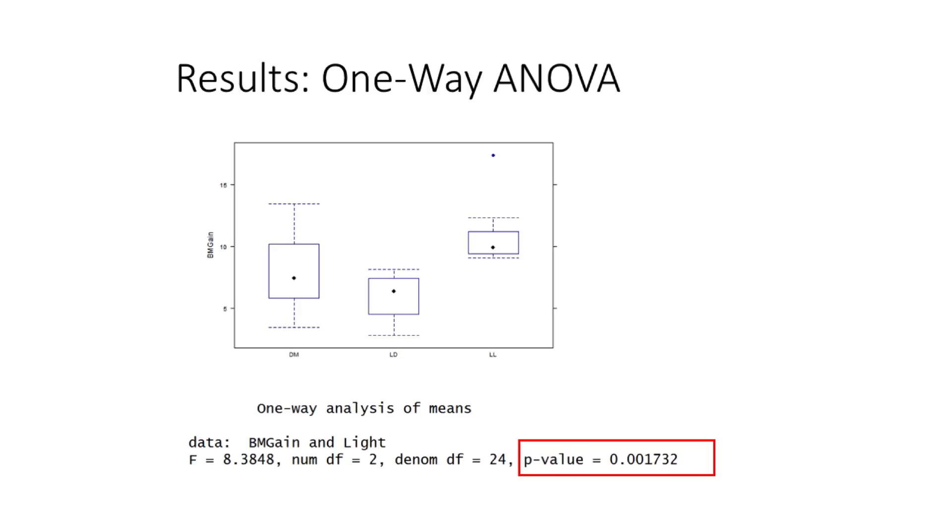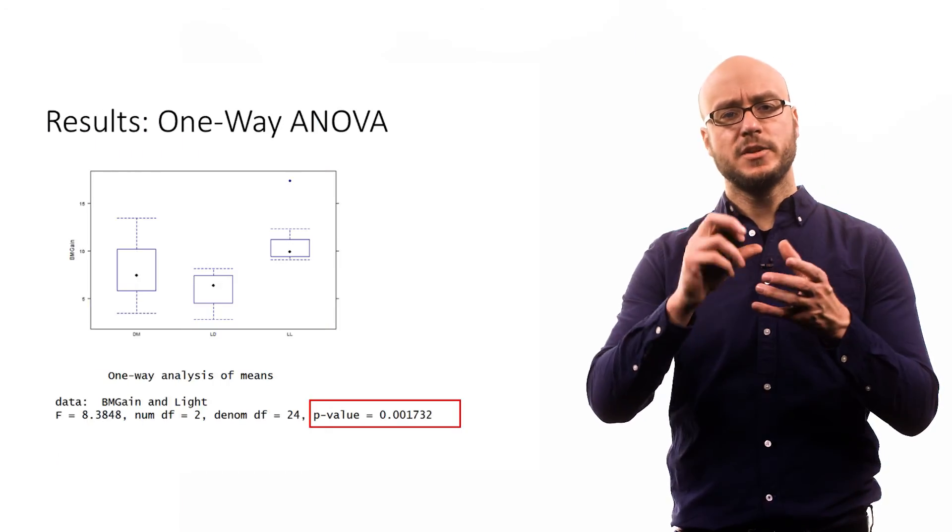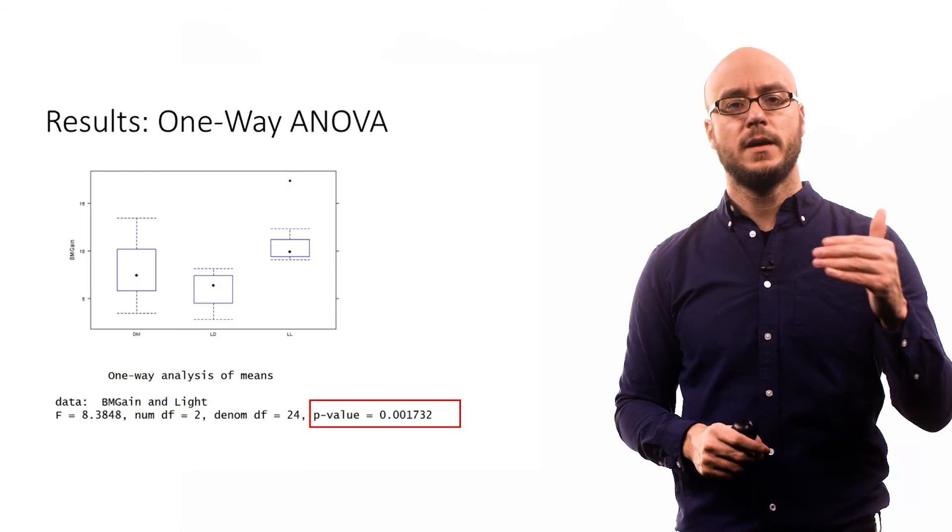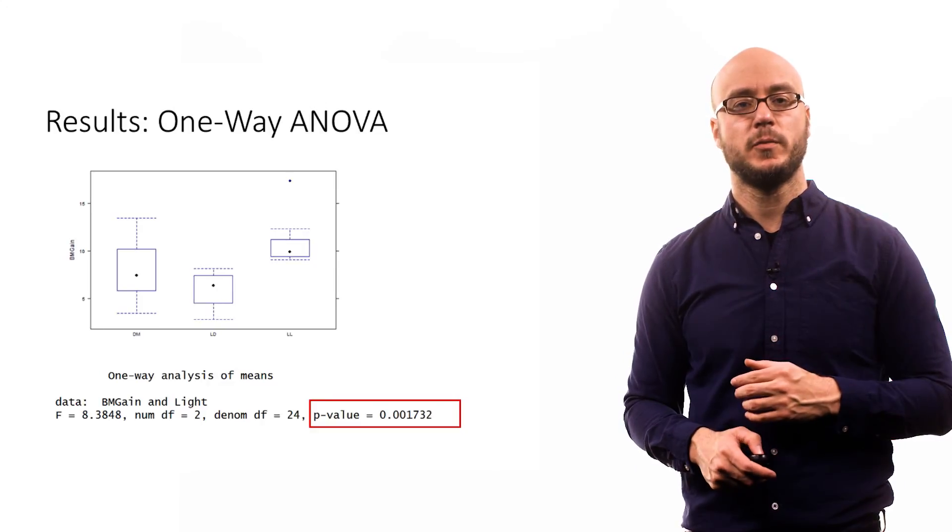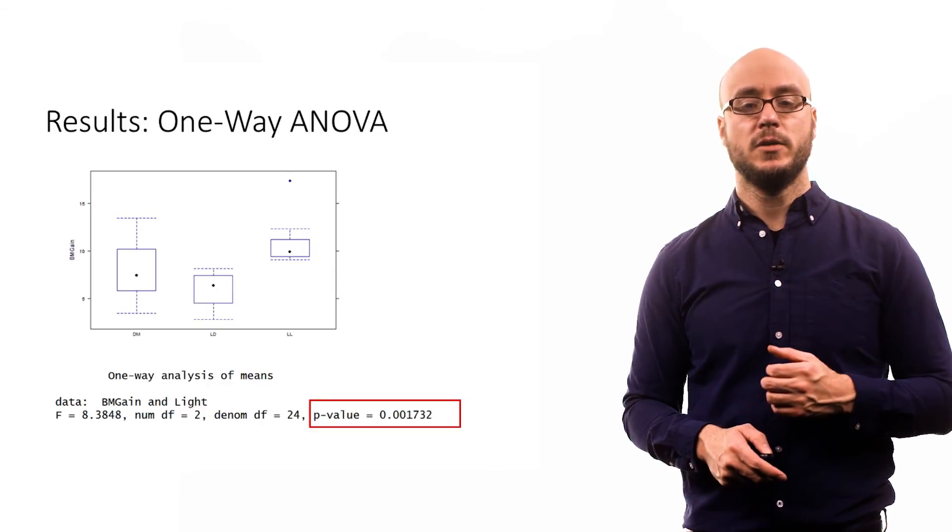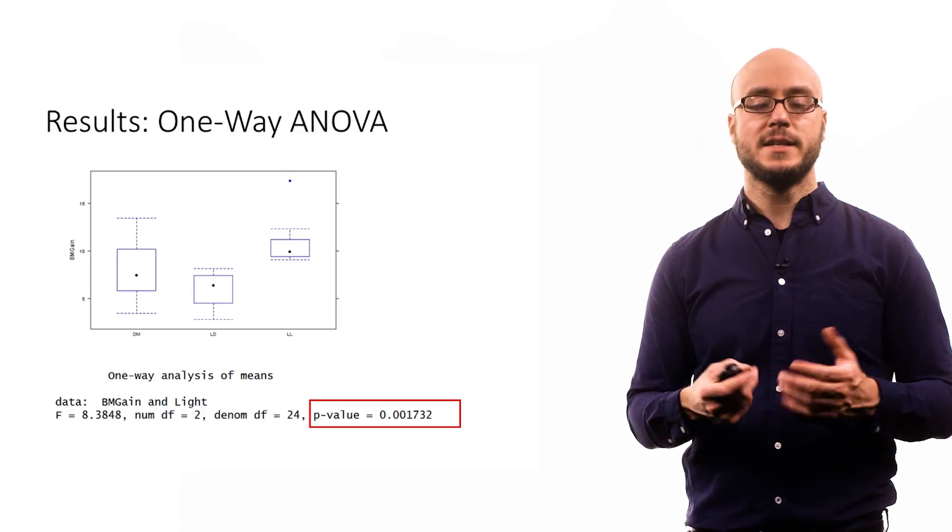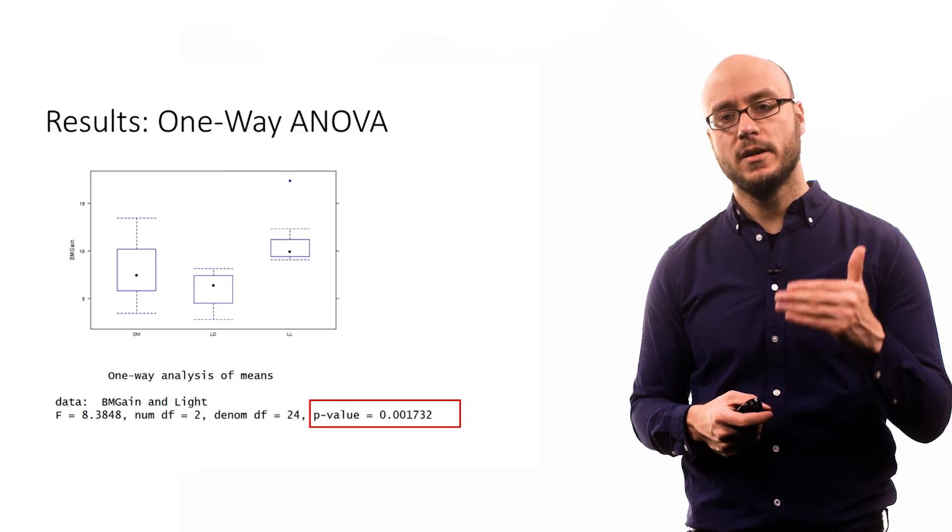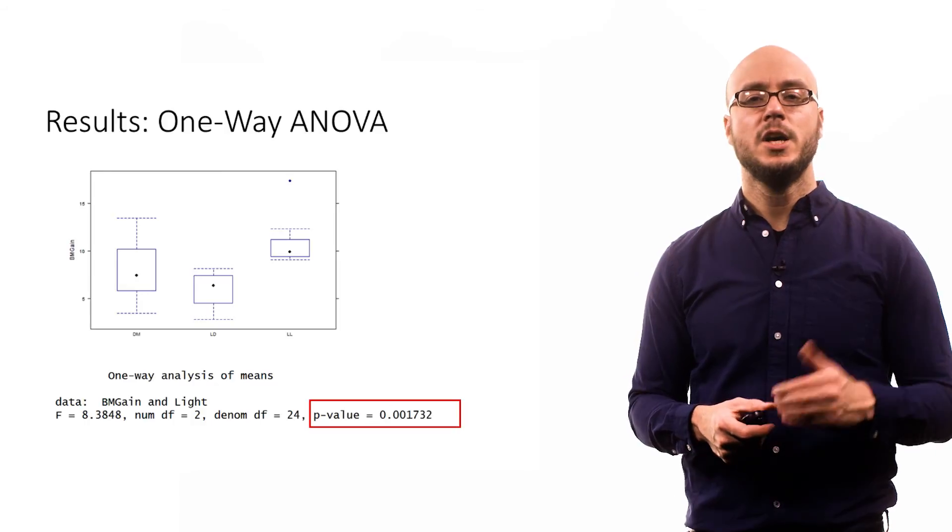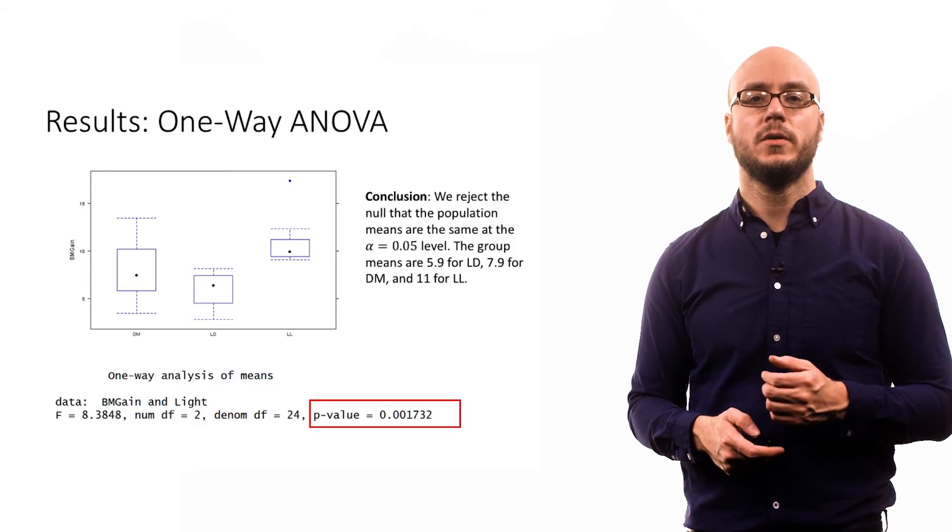The degrees of freedom of the denominator is 24. That reflects the degrees of freedom corresponding with the sum of squares within. And based on the ratio of mean squares between divided by the mean squares within, we get a p-value of 0.0017. That's less than our conventional standard of alpha of 0.05, so we reject the null hypothesis.